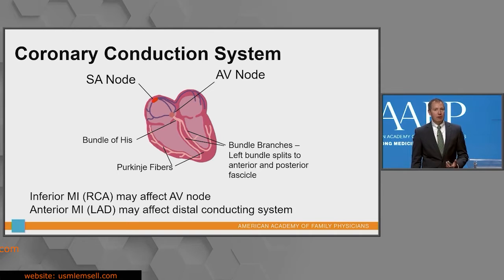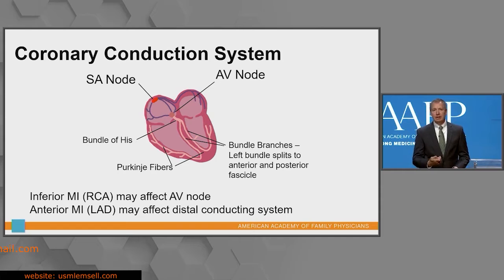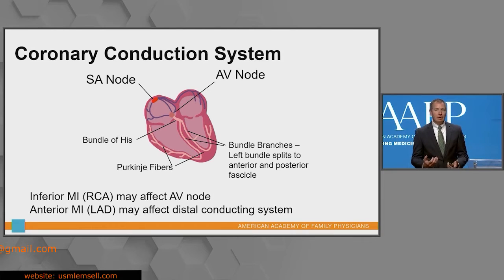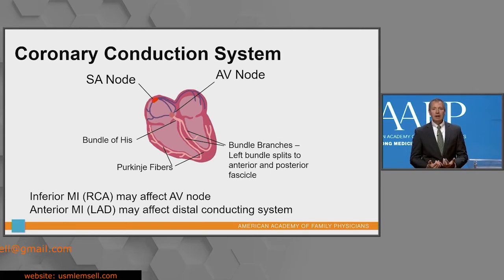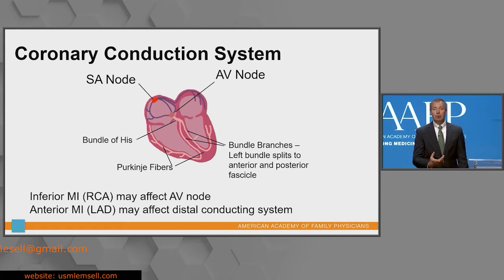If you knew nothing more about the cardiac conduction system, have at least this bare picture in your mind. The SA node — sinoatrial node — sits high up in the right atrium. It's more like a region of pacemaking activity, but we still call it the SA node. Further down in the atrioventricular junction is the AV node — essentially a little area of slowing between atrial depolarization and ventricular depolarization.